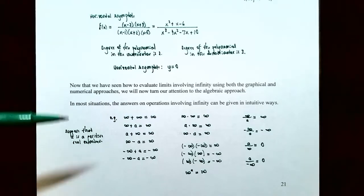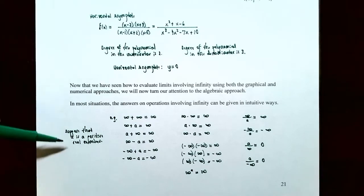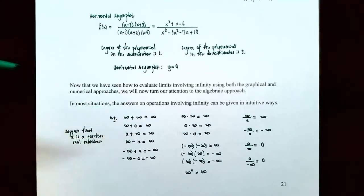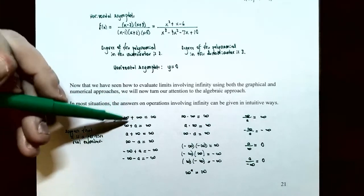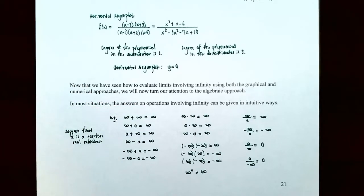In most situations, operations involving infinity can be given in intuitive ways. You can think of infinity as a very large number when doing operations, or negative infinity as a very large negative number. So suppose that a is a positive real number. If you take infinity and add infinity — well, you take a large number plus another large number — you get another large number. So infinity plus infinity gives you infinity.